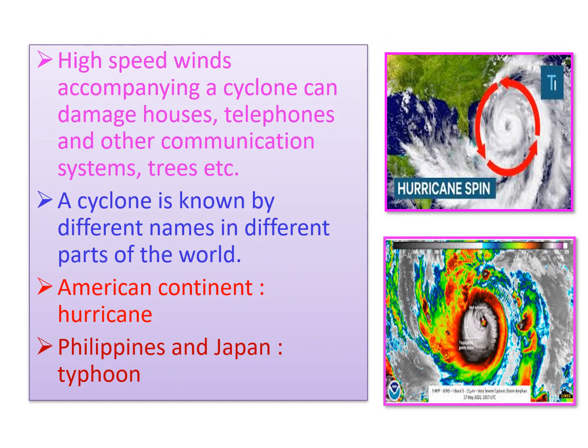Now we are going to learn the damages caused during cyclone time. High speed winds accompanying a cyclone can damage houses, telephones and other communication systems, trees, etc., causing tremendous loss of life and property. Cyclone is a very serious natural calamity and natural disaster, causing too much damage.